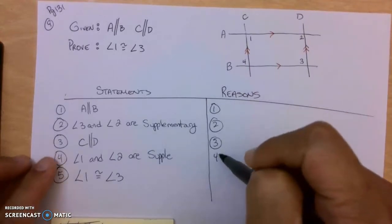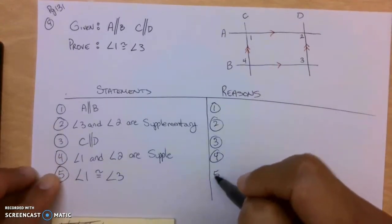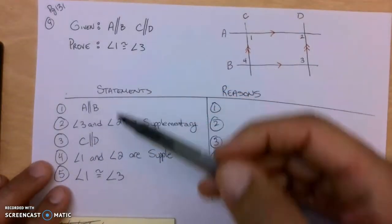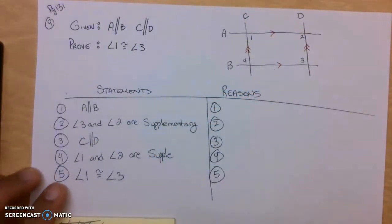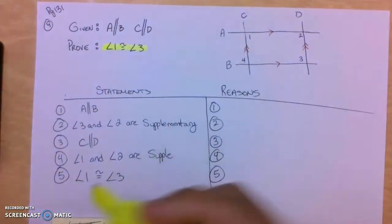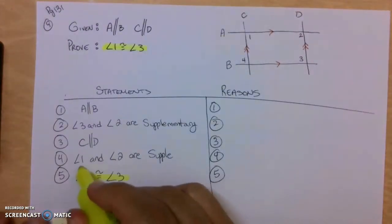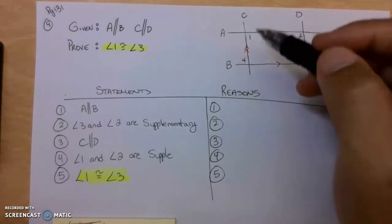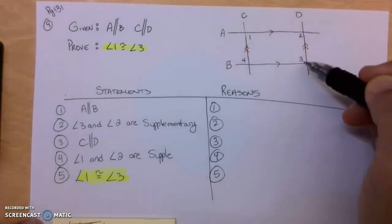Obviously there are statements on the left and then reasons on the right. Usually we start with the given and then we try to get to the finish line. Now with this finish line, this is what we're trying to prove. Why would angle 1 be equal to angle 3? That's where you notice it's right there at the finish. That's when you're done with the end of the problem. So you're trying to figure out why would this angle be equal to this angle here?